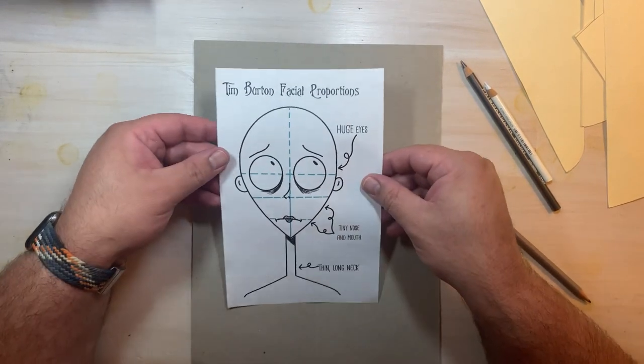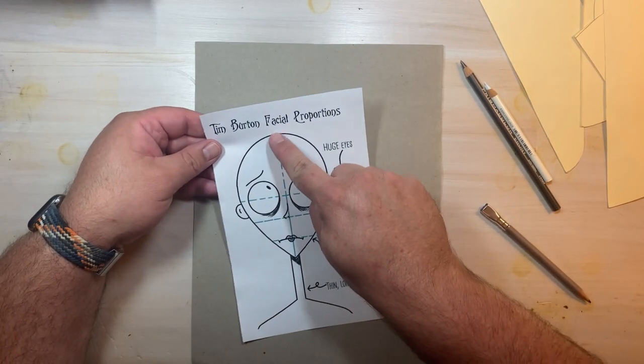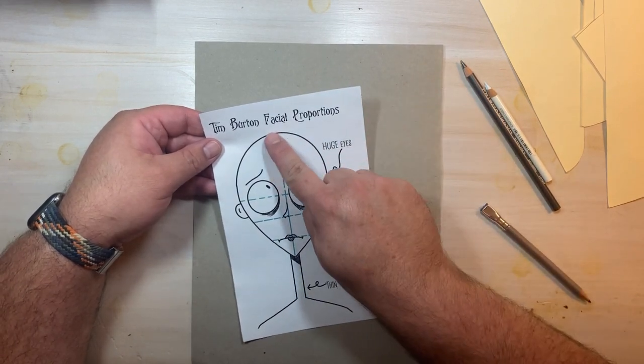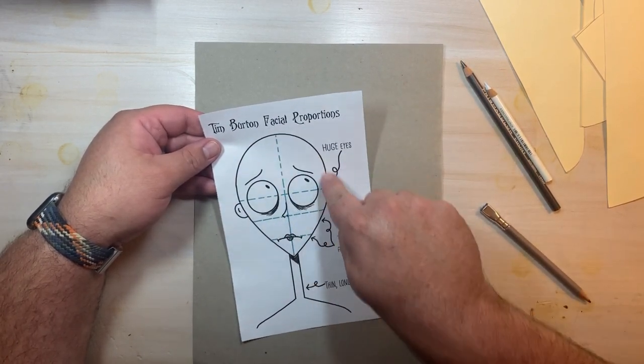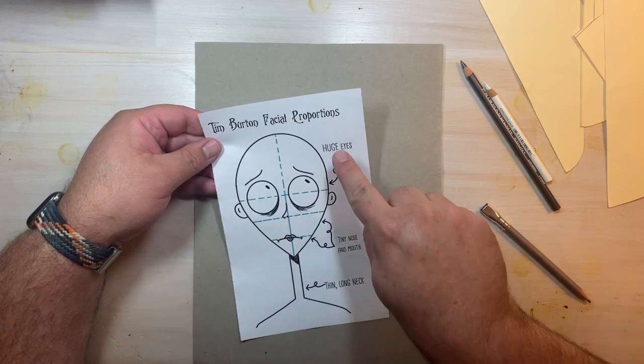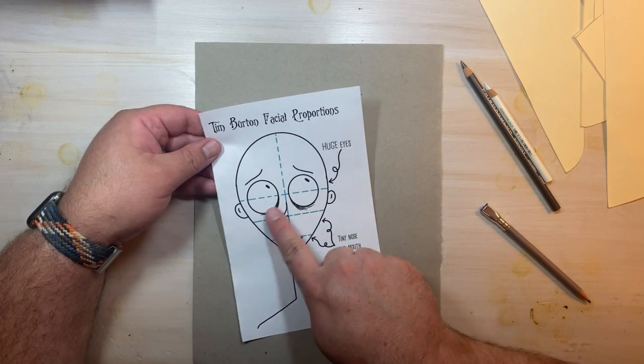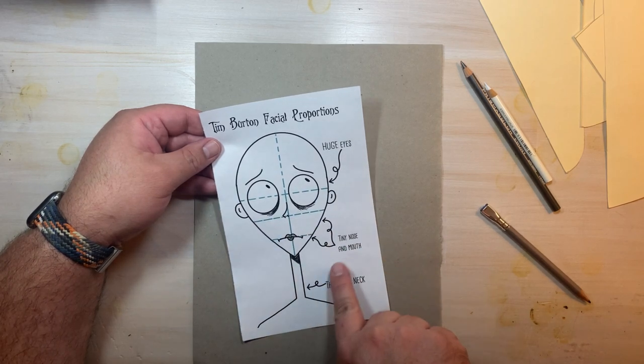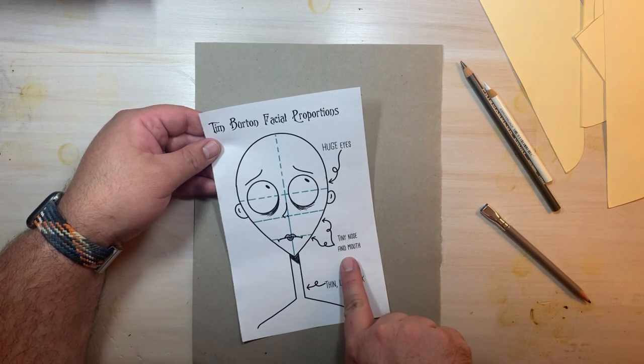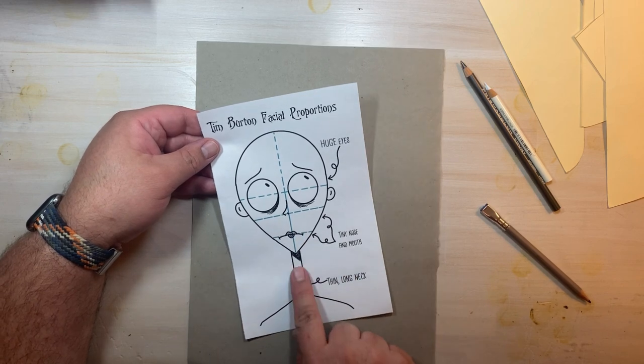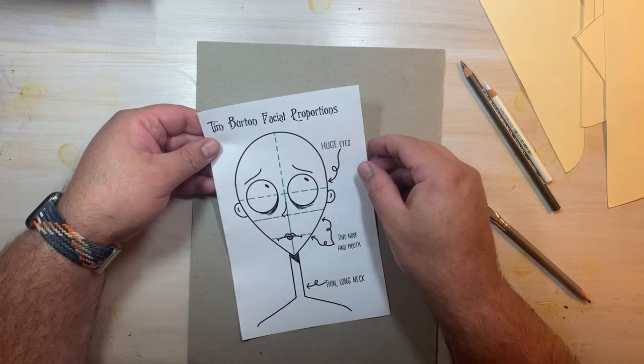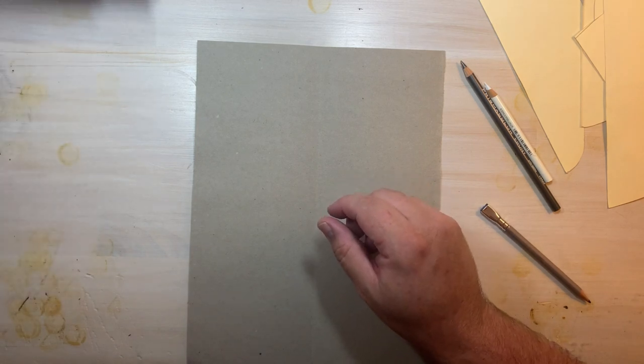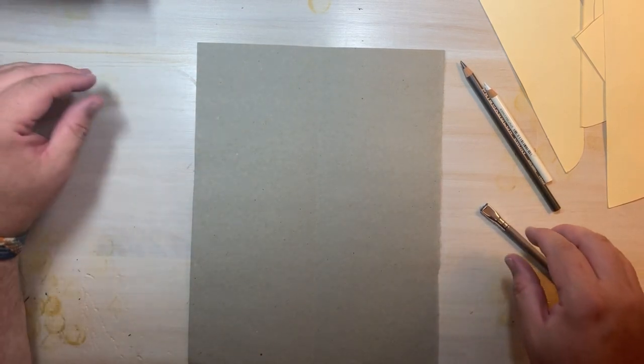Now I'm going to provide you with some diagrams to help you come up with a great Tim Burton style portrait. Notice that the head is symmetrical. Halfway down we have some very large eyes. A small nose and a very small mouth are classic examples of Tim Burton style. Thin long necks are also an option. So let's get started.